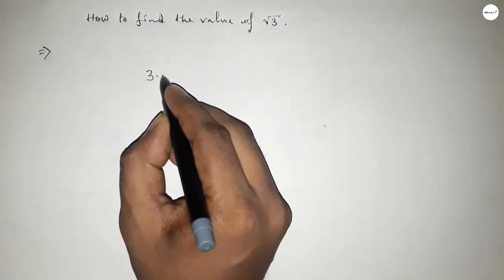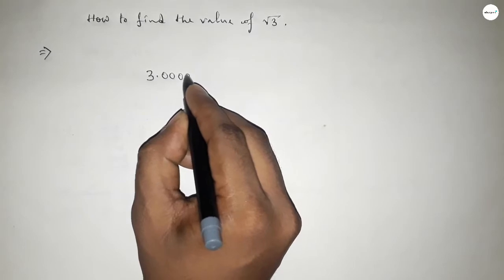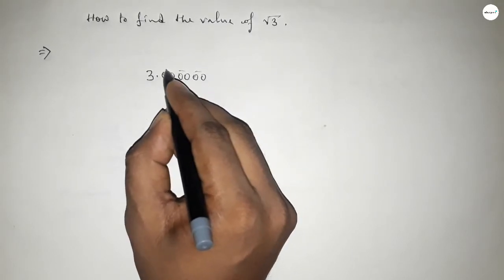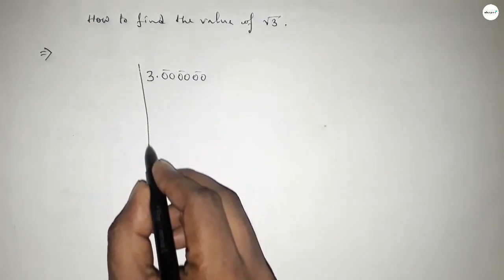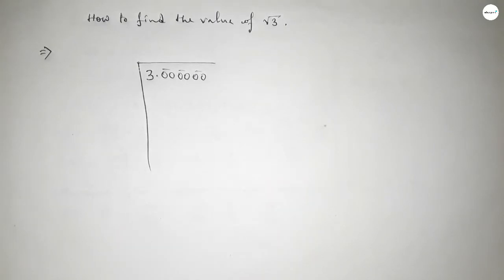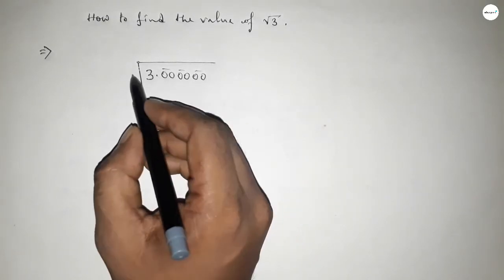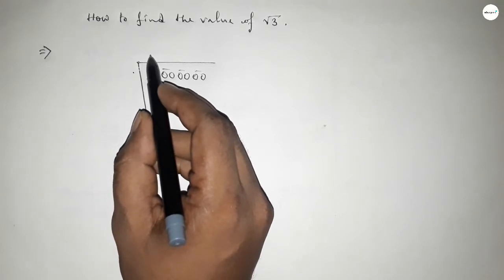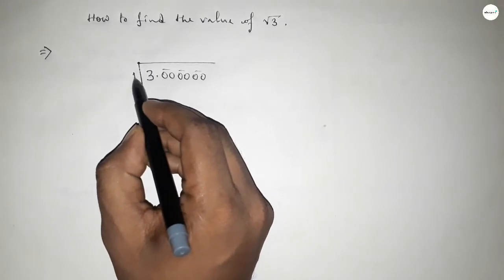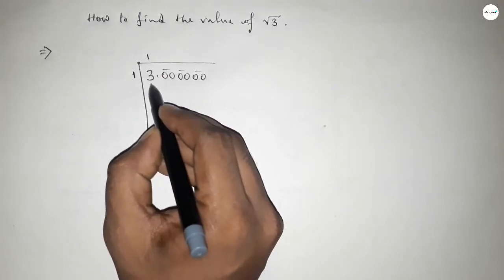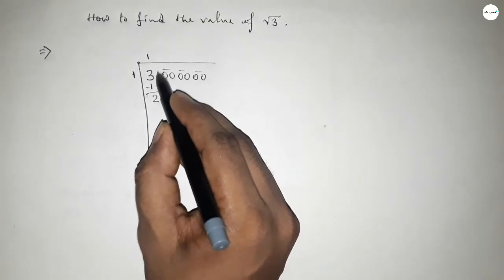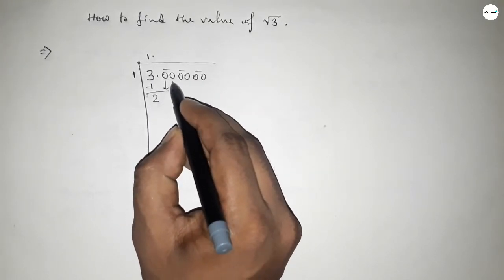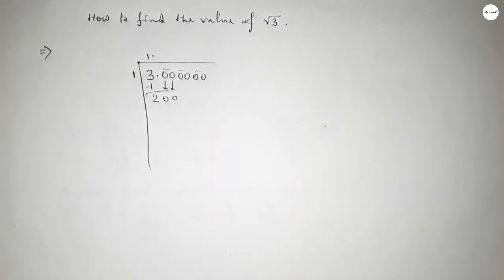I am going to find the value of root 3 up to 3 decimals. So we take 3.000000 and mark the zeros in pairs. Now taking the division mark — if we put 1 then 1×1=1, if we put 2 then 2×2=4 which is greater than 3. So we take 1 here, giving 1×1=1. Subtracting, this is 2. Now the decimal point goes here, and we bring down the next pair of zeros.